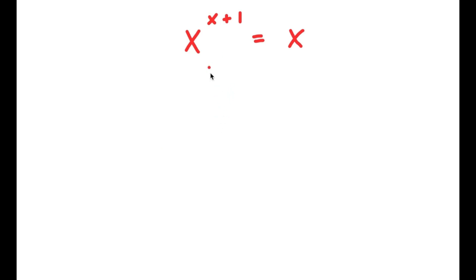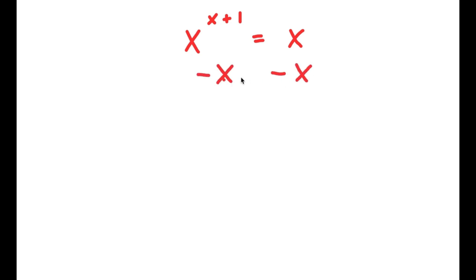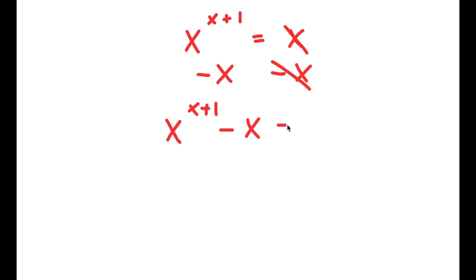In this problem, I have x to the power of x plus 1 is equal to x. To solve this, I start by subtracting x on both sides, so I'm left with x to the power of x plus 1 minus x equals 0.